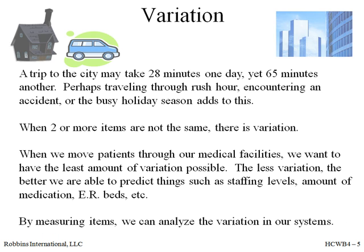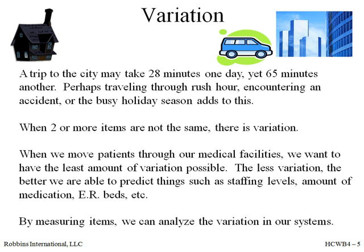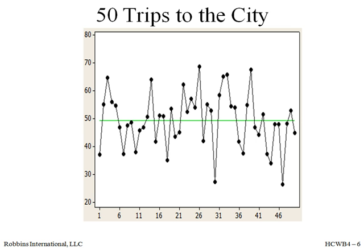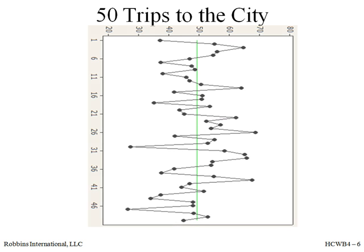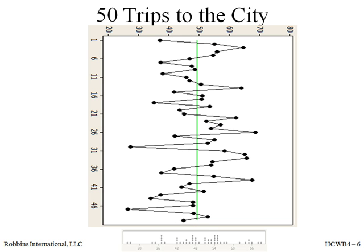Driving to a nearby city does not always take exactly the same amount of time — different things cause variation in this process, and we encounter the same variation in our medical facilities. In order to analyze the variation in our systems, we will need to accurately measure things. Here are the last 50 trips to this city. There is certainly variation, made during different days of the week and times of the day. If we were to rotate the graph and shake the points so that they fell to the bottom, we would have a dot plot and the beginnings of a histogram.